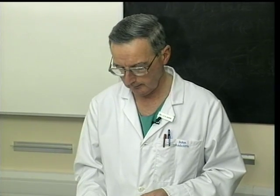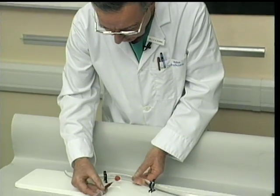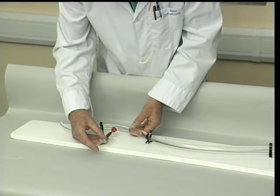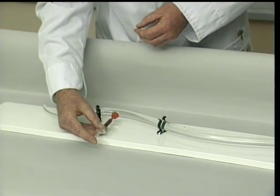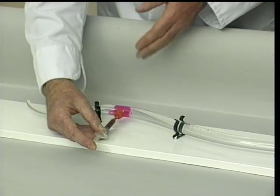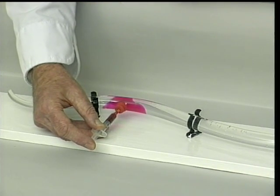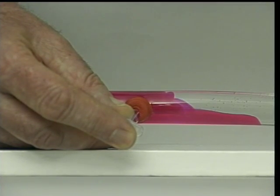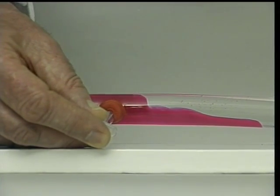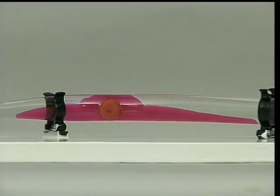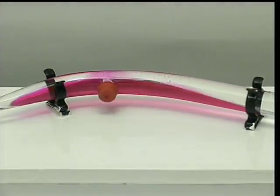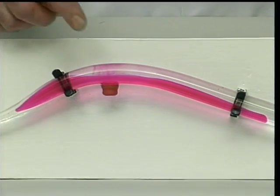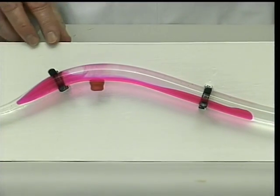For the first part of the demonstration, I'm going to inject a solution made hyperbaric with dextrose and stained with rhodamine dye. On this occasion the patient is lying on her side. As I inject the solution it cuts across the subarachnoid space and therefore the nerves of the cauda equina, and it moves a little upwards and downwards — cephalad and caudad in the subarachnoid space. We finish the injection, take the needle out, and turn the patient onto her back. The heavy solution then runs in both directions, caudad and cephalad in the subarachnoid space.